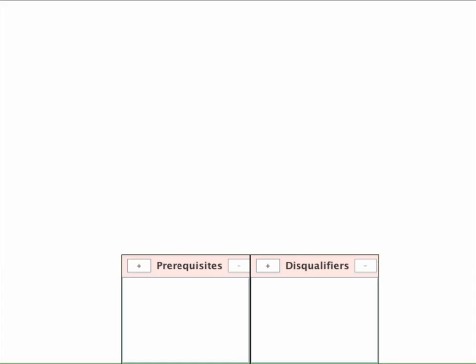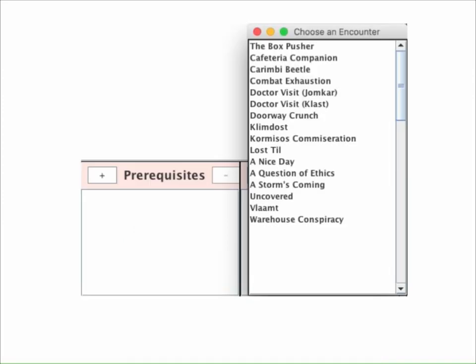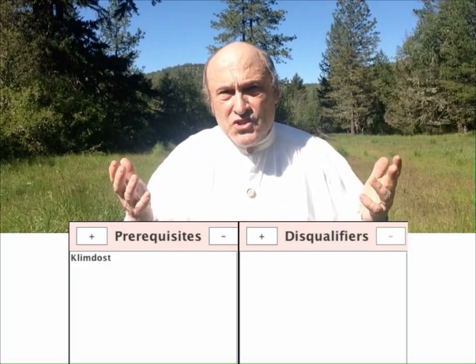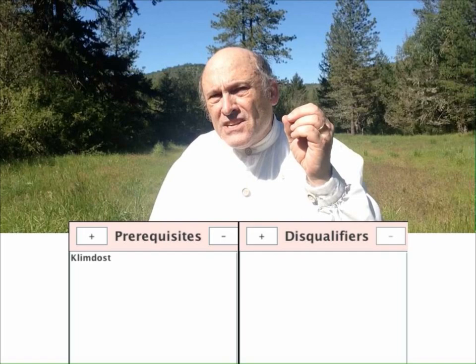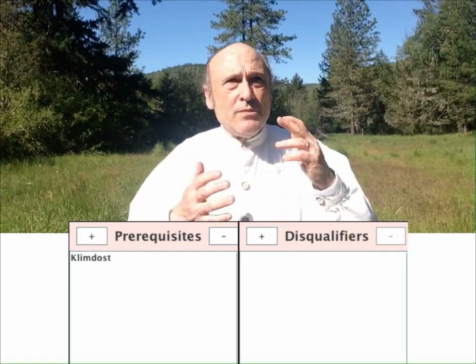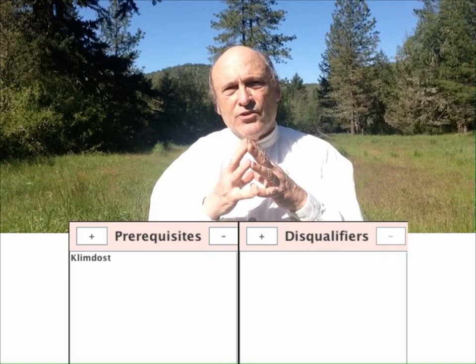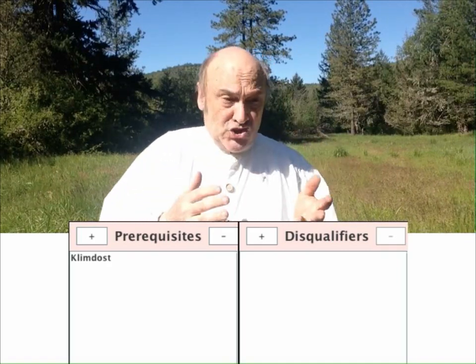We add a prerequisite by clicking on the button with the plus sign. A pop-up menu appears and we simply click on the encounter that we wish to be a prerequisite for the encounter called fly-is-open. Disqualifiers operate in exactly the same fashion, only they specify encounters that would somehow disqualify our fly-is-open encounter.